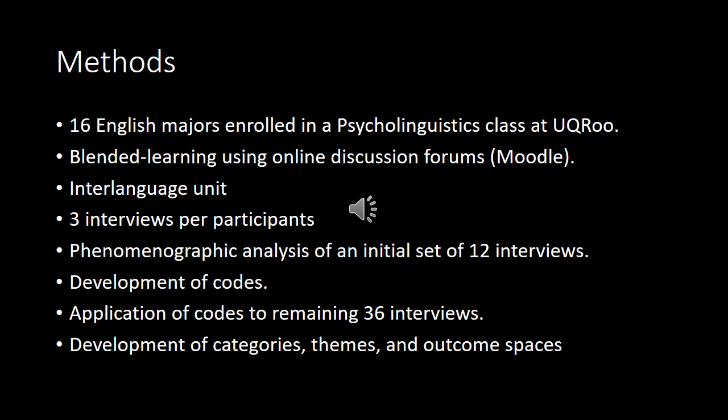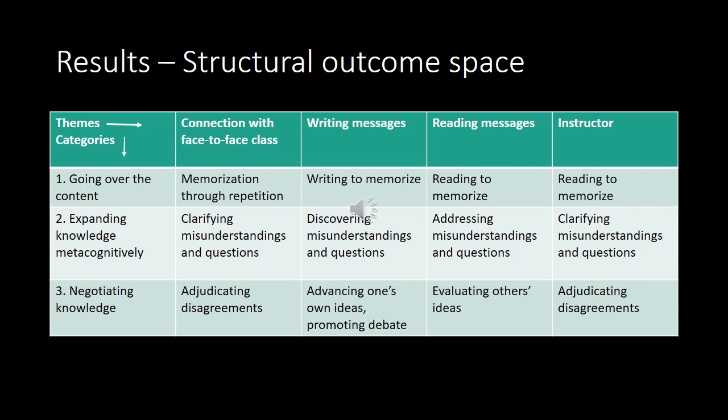Now the methods. The study was conducted at UCRO in a psycholinguistics class, and the participants were 16 English majors enrolled in this class. The class took place in blended learning with the assistance of Moodle and online discussion forums. We observed the unit focusing on interlanguage. We conducted three interviews per participant. We carried out an initial phenomenographic analysis with 12 of the interviews, which was used to develop codes. The codes were applied to the remaining 36 interviews and modified along the way. And then we developed categories, themes, and outcome spaces.